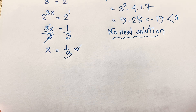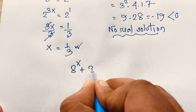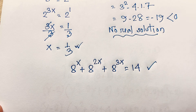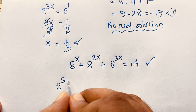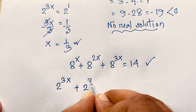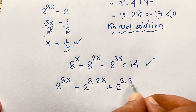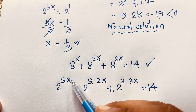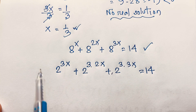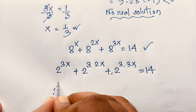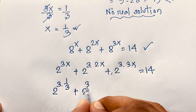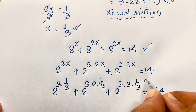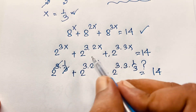Let's verify. The original equation is 8^x + 8^(2x) + 8^(3x) = 14. Substituting 8 = 2³: 2^(3x) + 2^(3·2x) + 2^(3·3x) = 14. With x = 1/3: 2^(3·1/3) + 2^(3·2·1/3) + 2^(3·3·1/3) = 14.